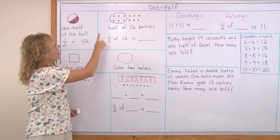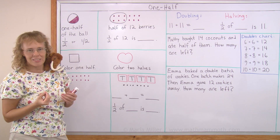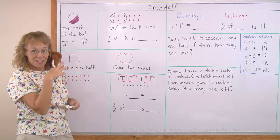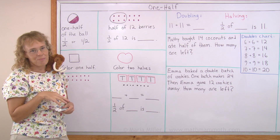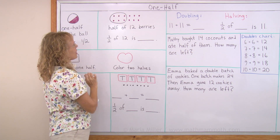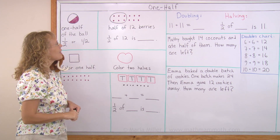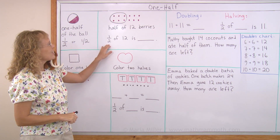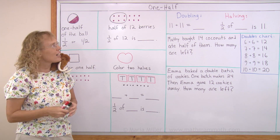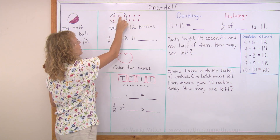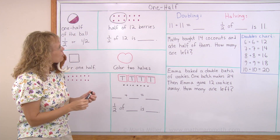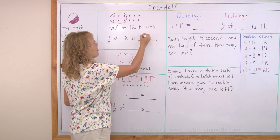Here I have twelve berries — raspberries. And I circled half of them. So this is half of the twelve berries. Half of twelve is how many berries? I can count here: one, two, three, four, five, six. Half of twelve is six berries.